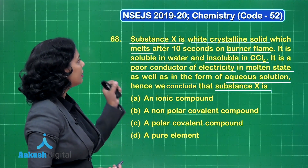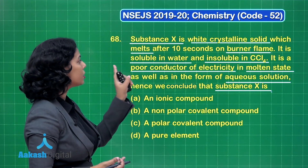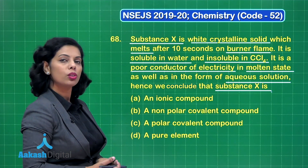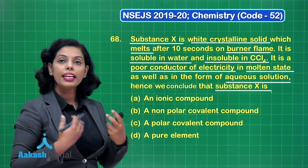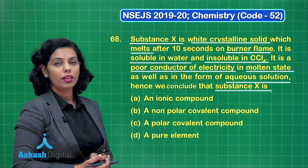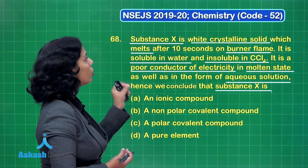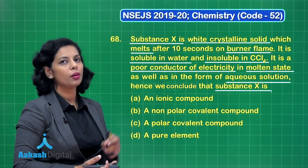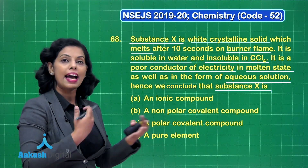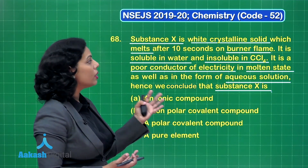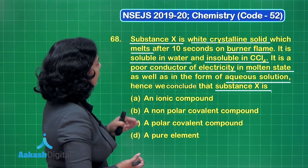One important thing is that substance X melts after 10 seconds on a burner flame, and the second important thing is that it is a poor conductor of electricity — so it could be a covalent compound. Further, it is soluble in water while insoluble in carbon tetrachloride. Since water is a polar solvent, if X is soluble in water, it should be polar as well. So we identify two things: it is covalent in nature and it is polar covalent.